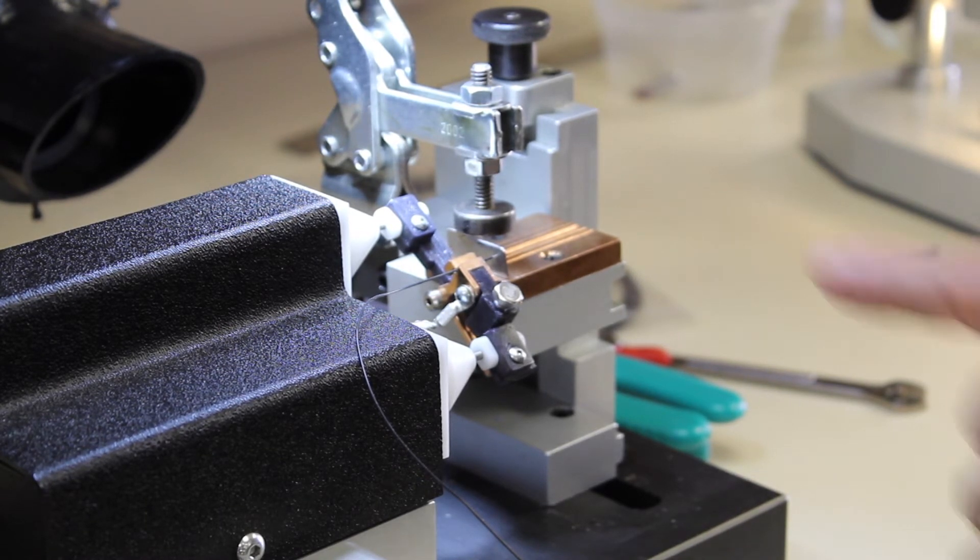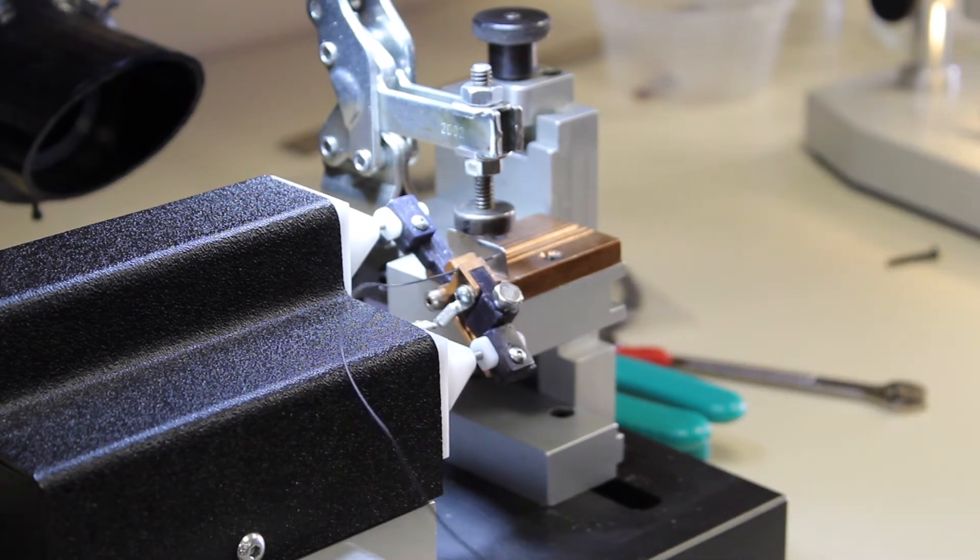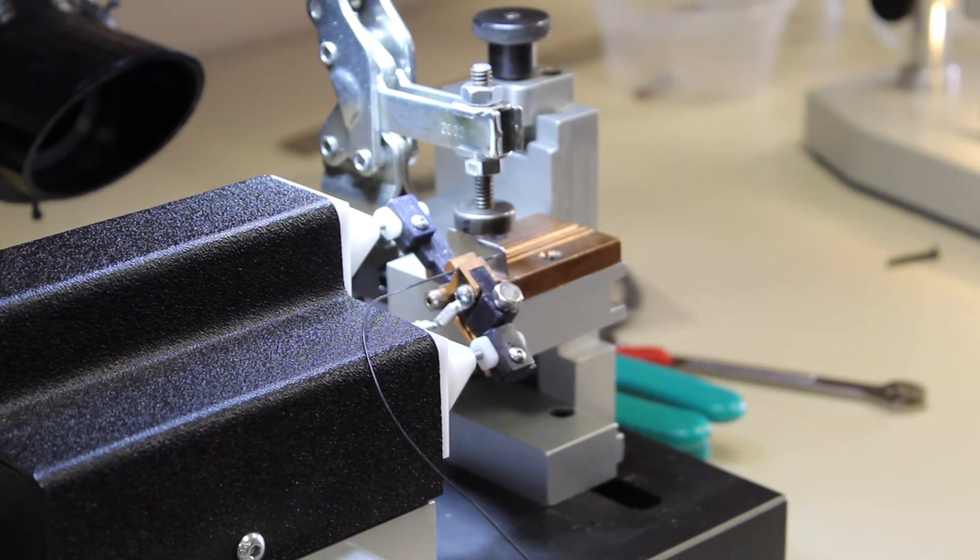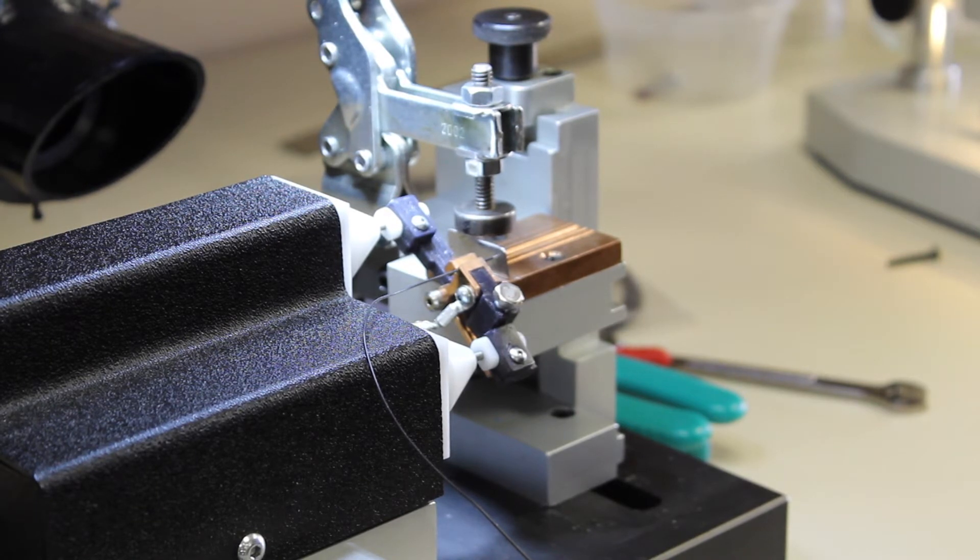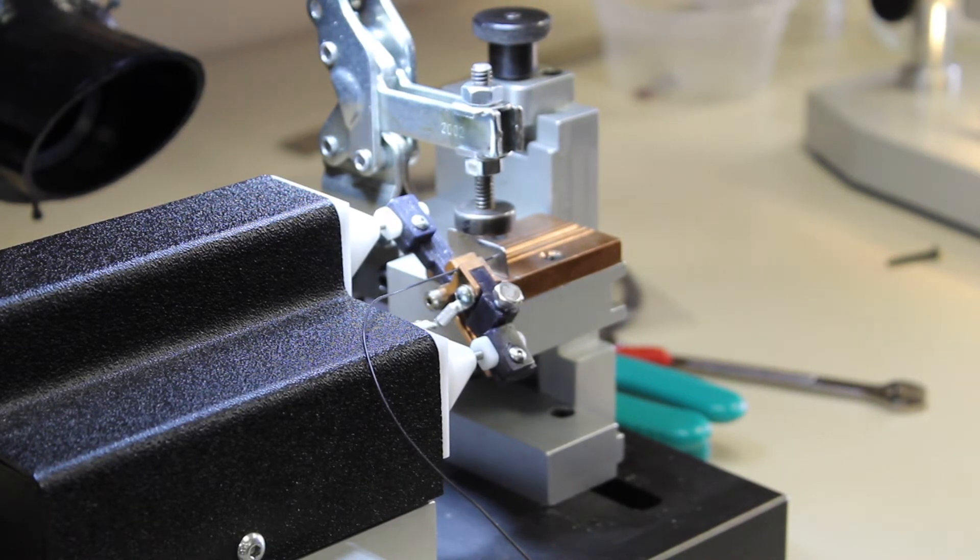What we have here is a piece of stainless steel and a 30 gauge copper wire. We're going to join that together and you can use your imagination for any configuration.